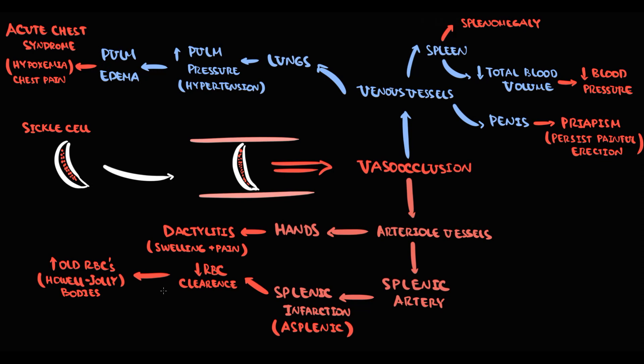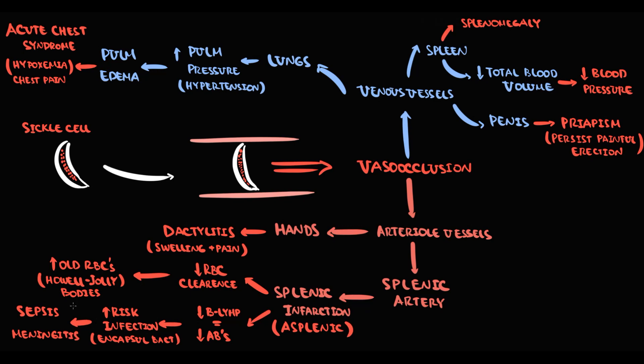Also, the spleen is the home of B lymphocytes. And the function of B lymphocytes is antibody production, primarily against encapsulated bacteria. So in an asplenic condition, we cannot produce antibodies into the circulation. Without antibodies, we cannot kill encapsulated bacteria. And this greatly increases the risk of infections caused by encapsulated bacteria, such as Streptococcus pneumoniae or Neisseria meningitidis.